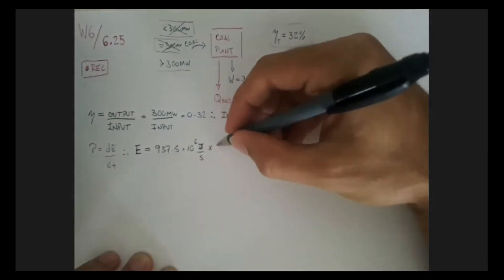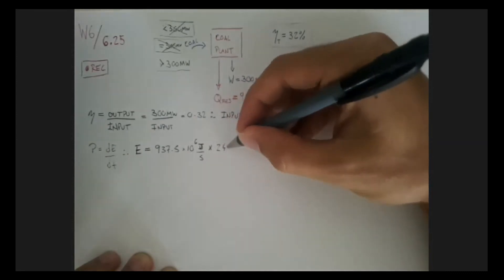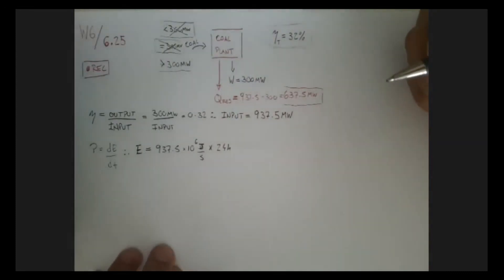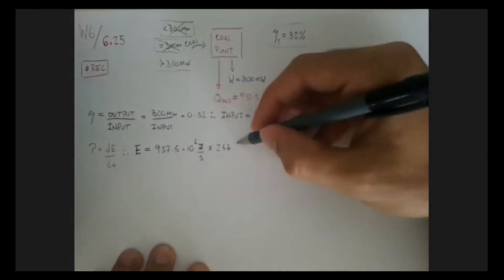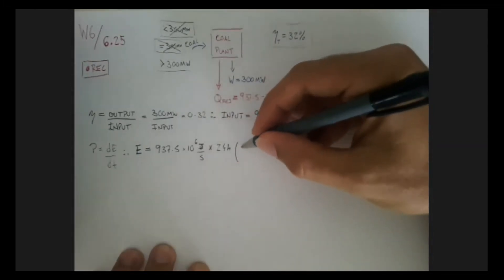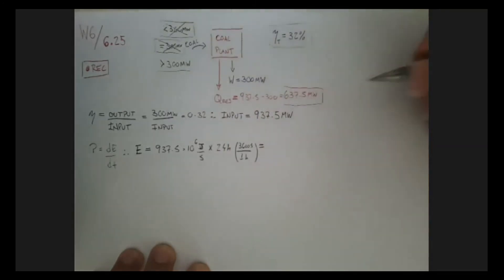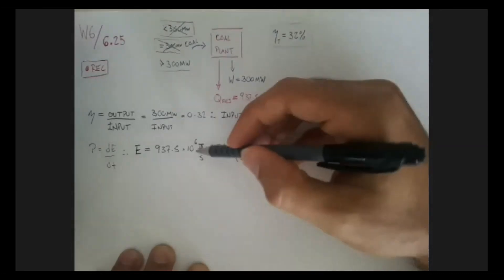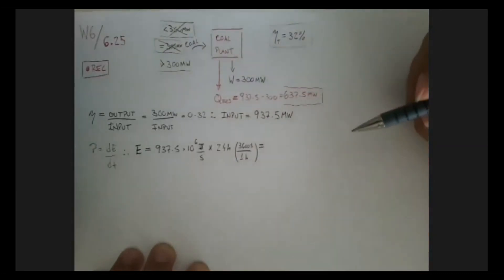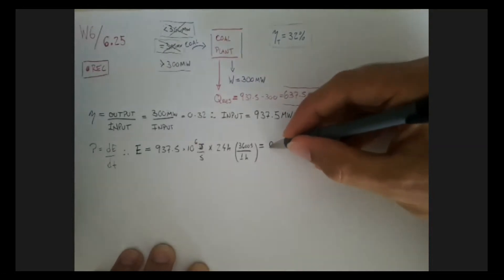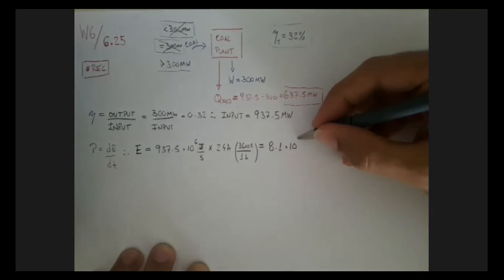And then I'm multiplying that by the time. In this case it's 24 hours, a 24 hour period. Obviously this is not going to work for us, so I'm just going to convert. In one hour, I know I have 3600 seconds, so I can get rid of the seconds and the hours. And then this is going to give me a unit of energy, joules. I can keep the 10 to the 6 if I want and just make megajoules there.